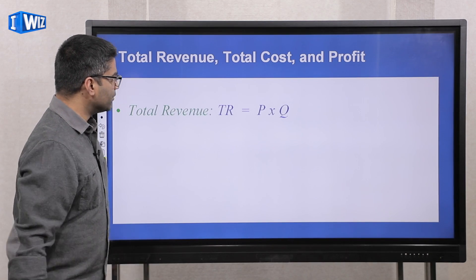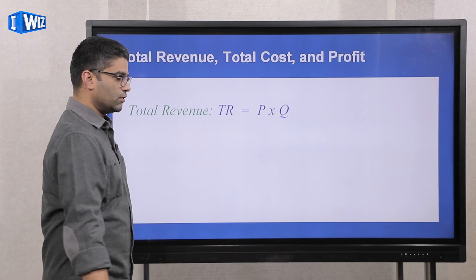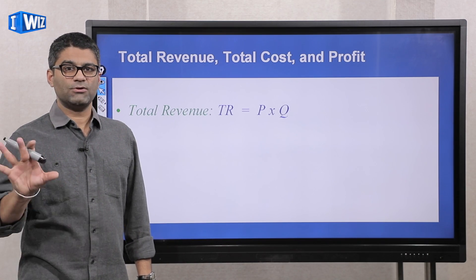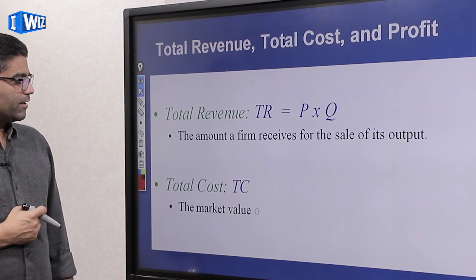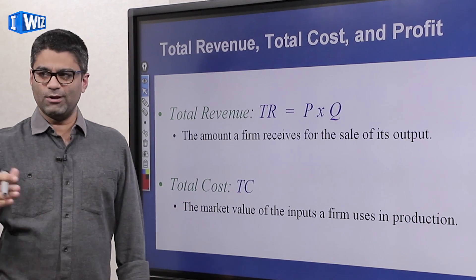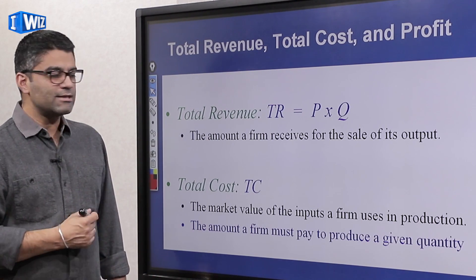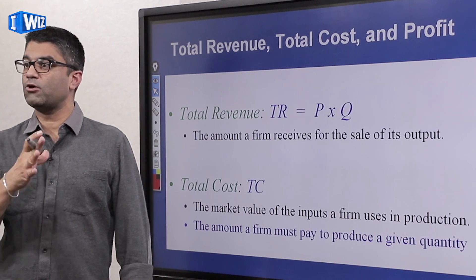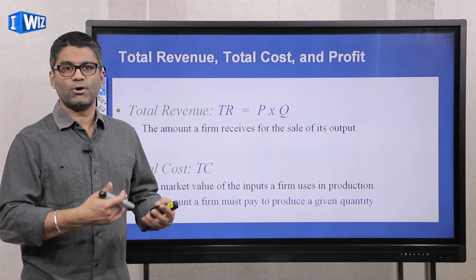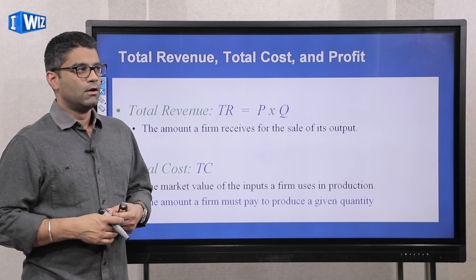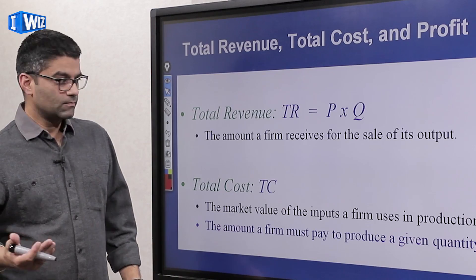Total revenue — we already introduced that concept in the previous video — it's the price you charge for the good times how many units you sell. That's how much you bring in when you sell those cakes and pastries. Total cost, TC, is the market value of all the inputs you use to produce the output. In our example: raw materials like milk and flour, labor like a person you hire or a cashier, the lease on the building, the machines you're buying — all of those things are cost.